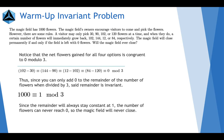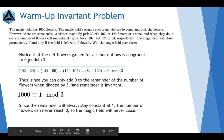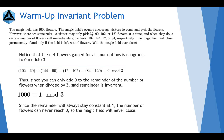Notice that the net flowers gained for all options is congruent to 0 modulo 3. At first glance, this problem may seem difficult, but if you use invariants, it becomes much more simple. Your first option is you pick 30 flowers and 102 grows back, so you have 102 minus 30, 72 net flowers, 0 modulo 3.